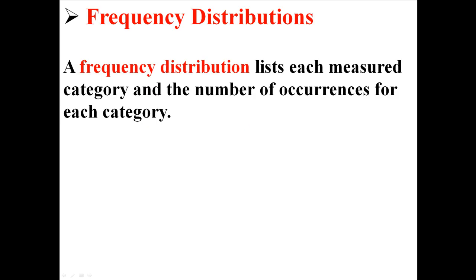So a frequency distribution lists each measured category and the number of occurrences of each category. Let me show you an example of that because that's a little bit hard to get.